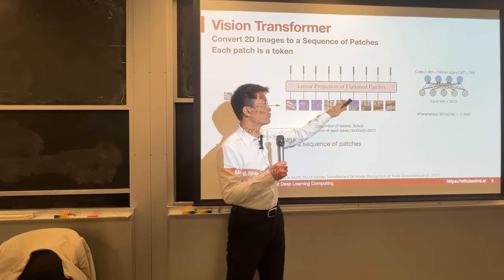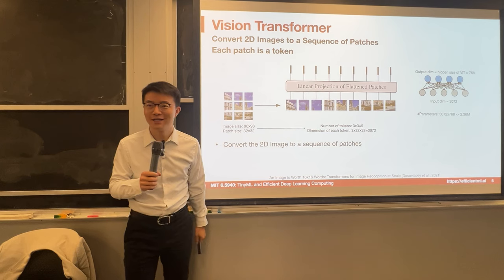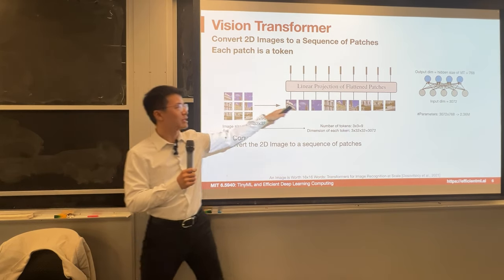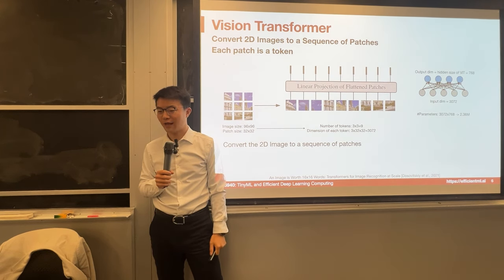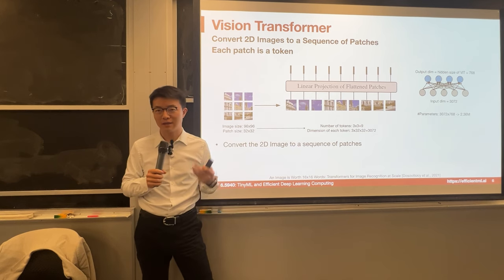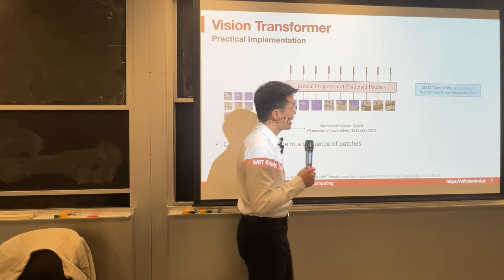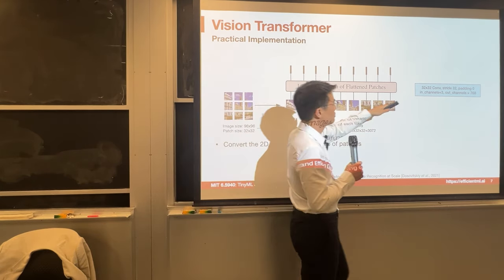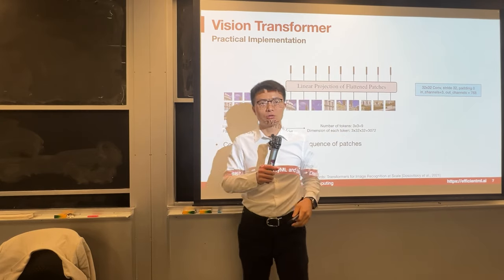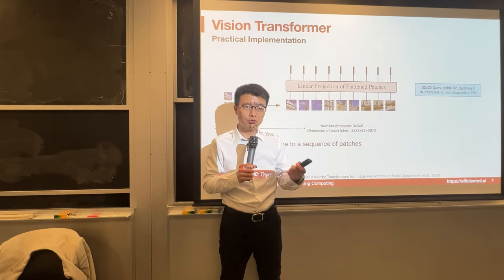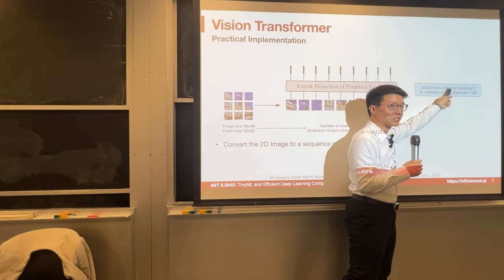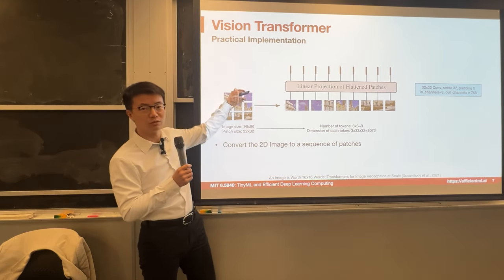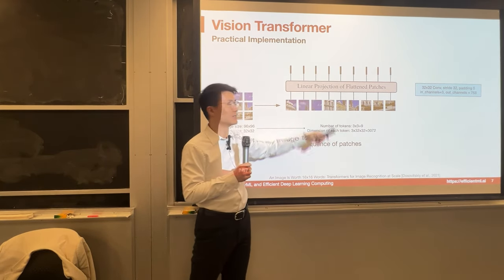Since everything is flattened, there is no spatial relationship indicating which patches are contiguous. We solve this by applying positional encoding so the model has position information. A practical implementation of the patch projection is to use convolution, since we are applying the same 32×32 conv weights across different patches. The key is to use a kernel size of 32 with stride 32 so there is no overlap between windows. Since convolution kernels are very well and efficiently implemented on GPU, this is a natural and efficient way to implement the linear projection.